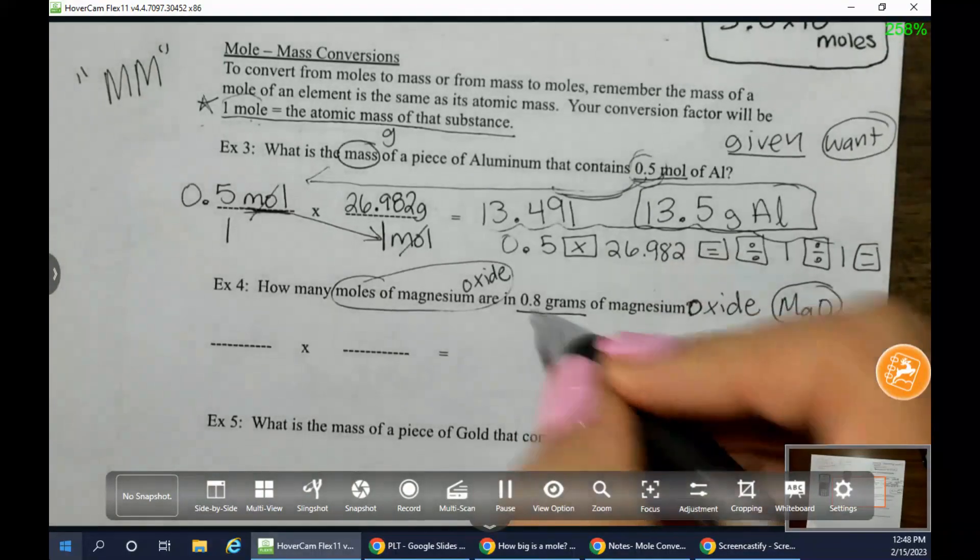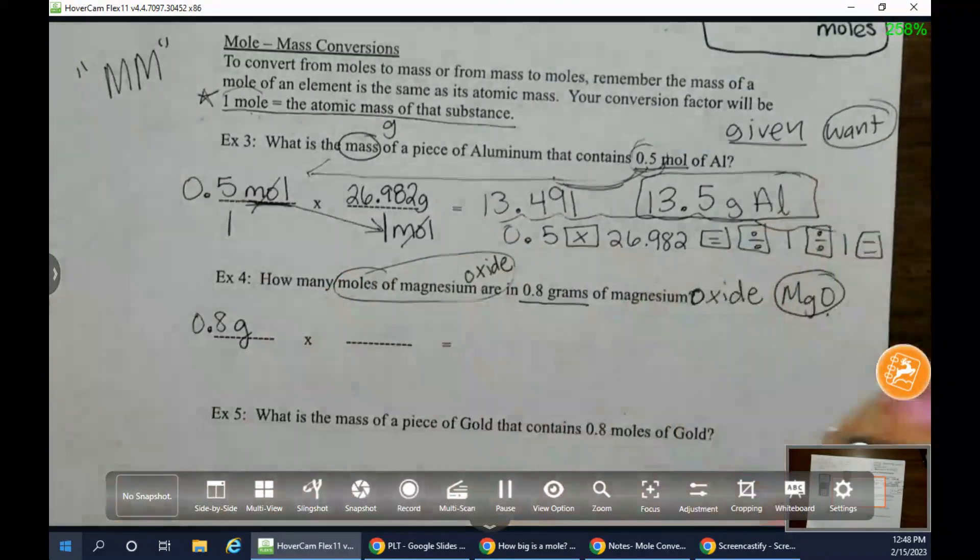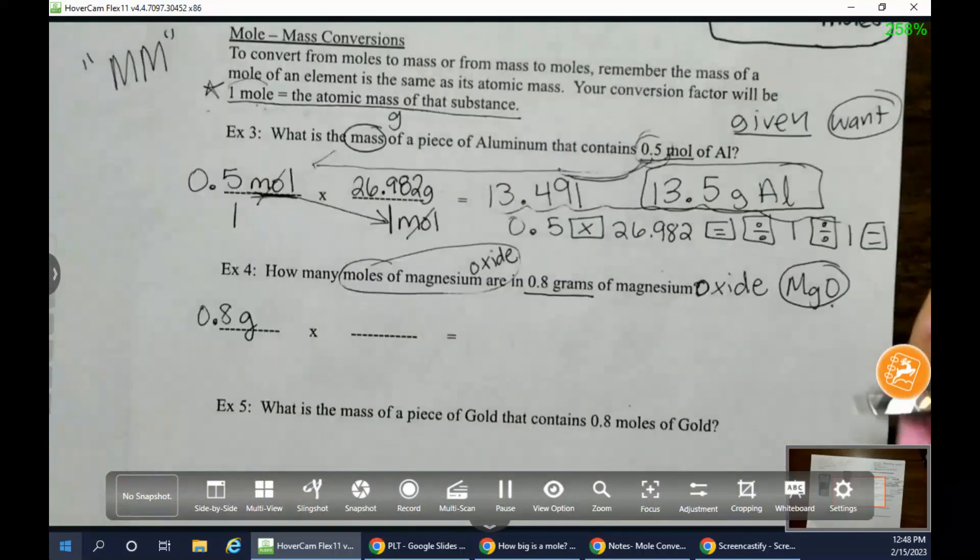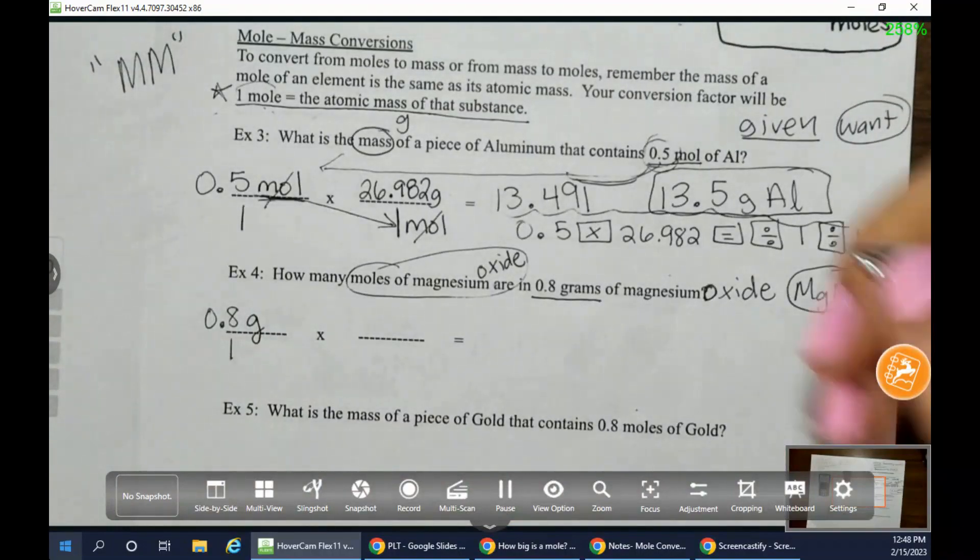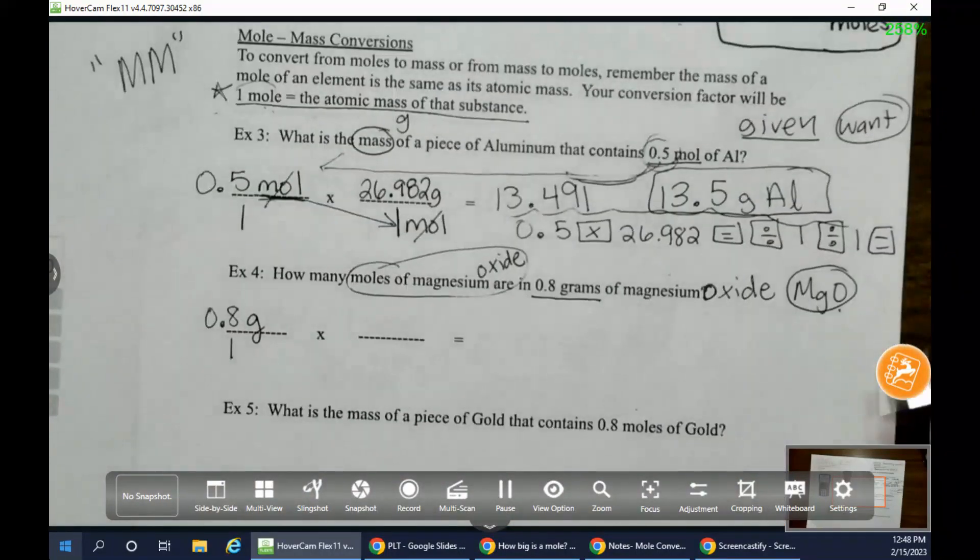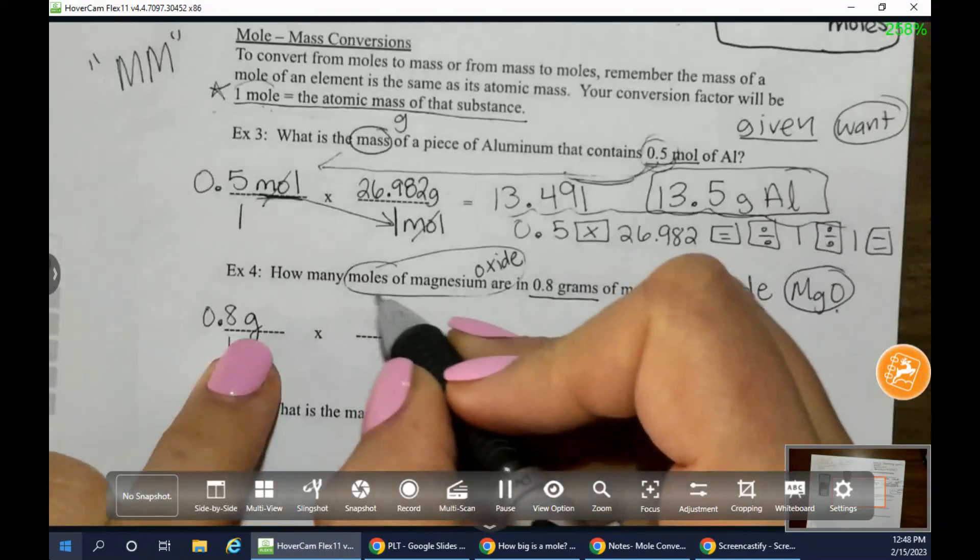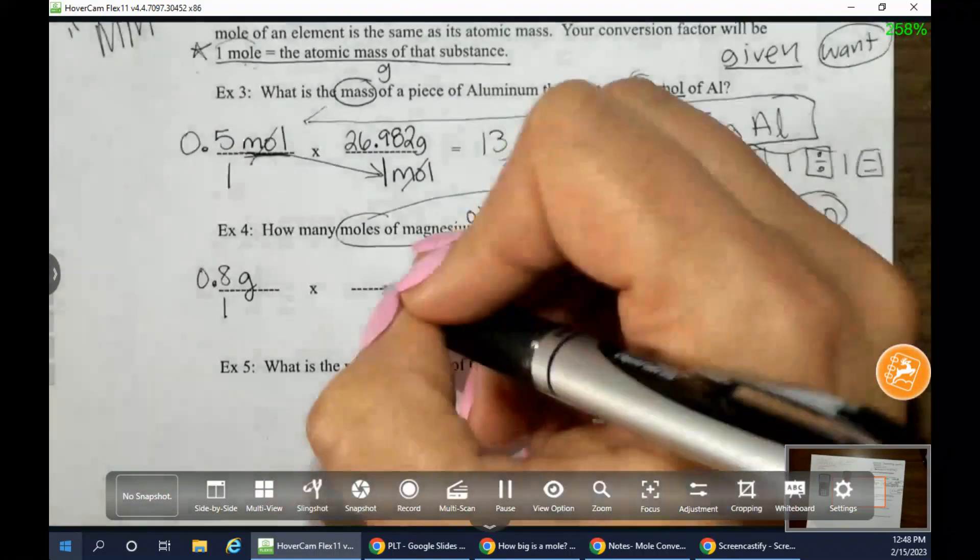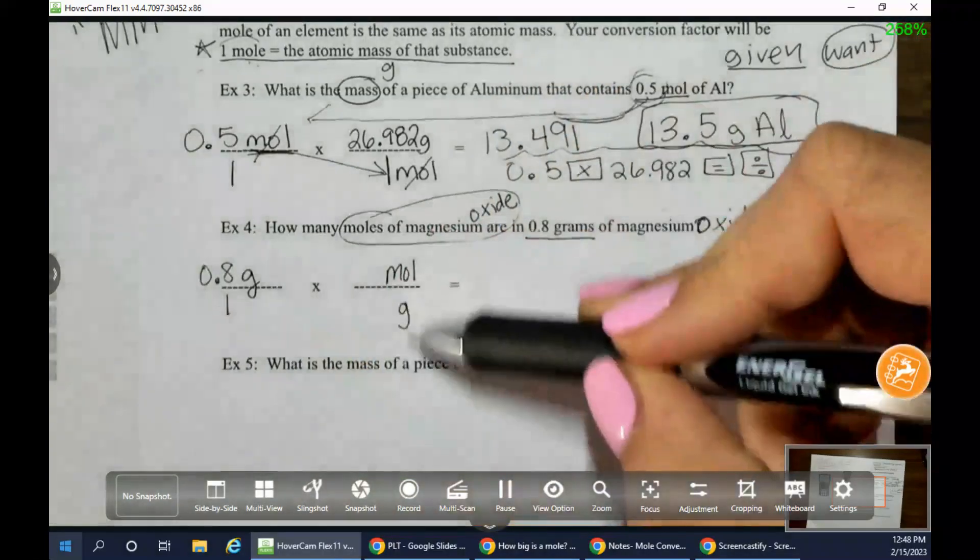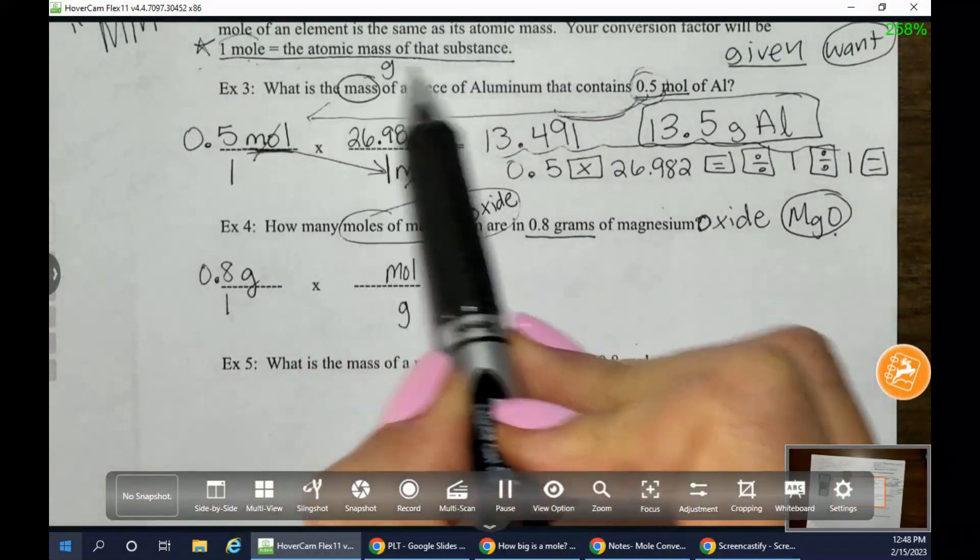So just like before, we're going to start with that 0.8, but this time it's grams of magnesium oxide. We know that we can always throw that over the number 1. What would be your next step? What would you bring down to the right? Grams or moles? Grams. Exactly. We have grams here. We need it to cancel out, because we want to get to moles, right? So we're going to take grams down to the right. And we're going to put moles on top.